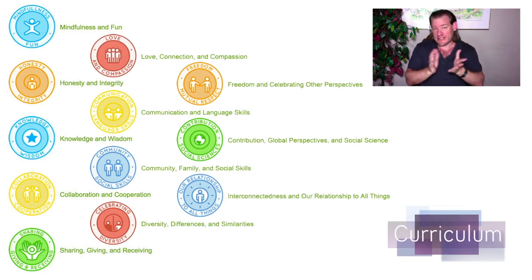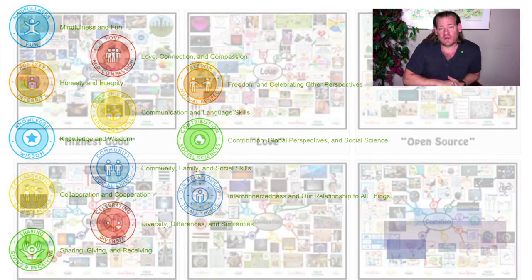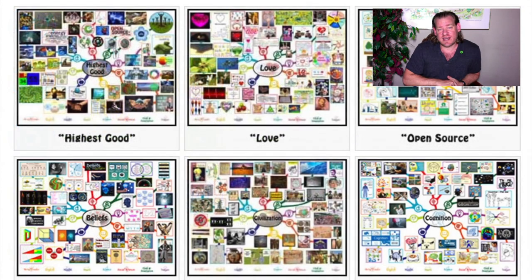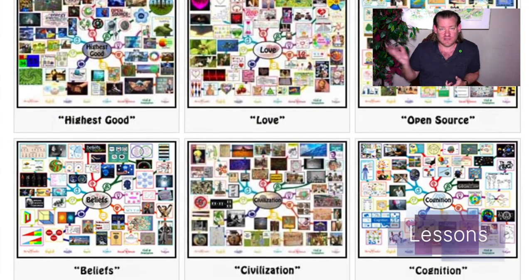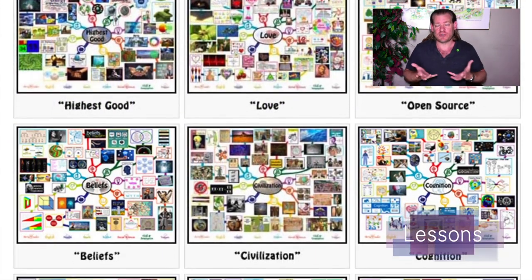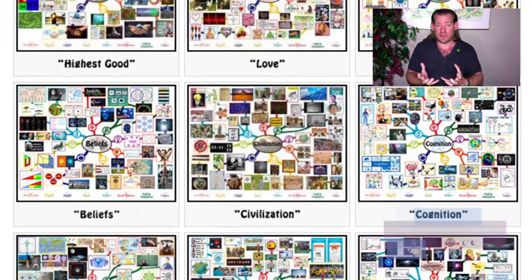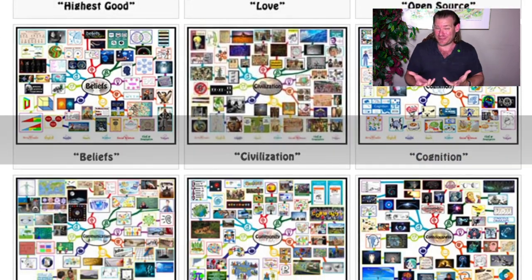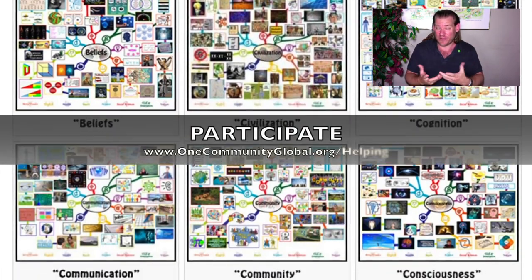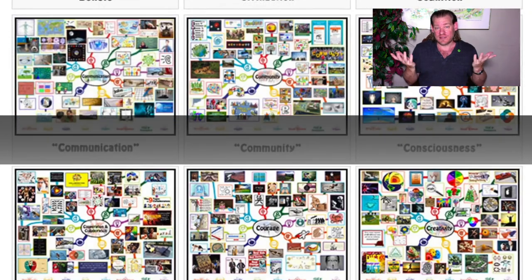This is what One Community is doing — demonstrating cooperative systems design and integrating it into all the physical foundations, the emotional foundations, and showing what a culture of cooperation and collaboration is possible of and capable of.